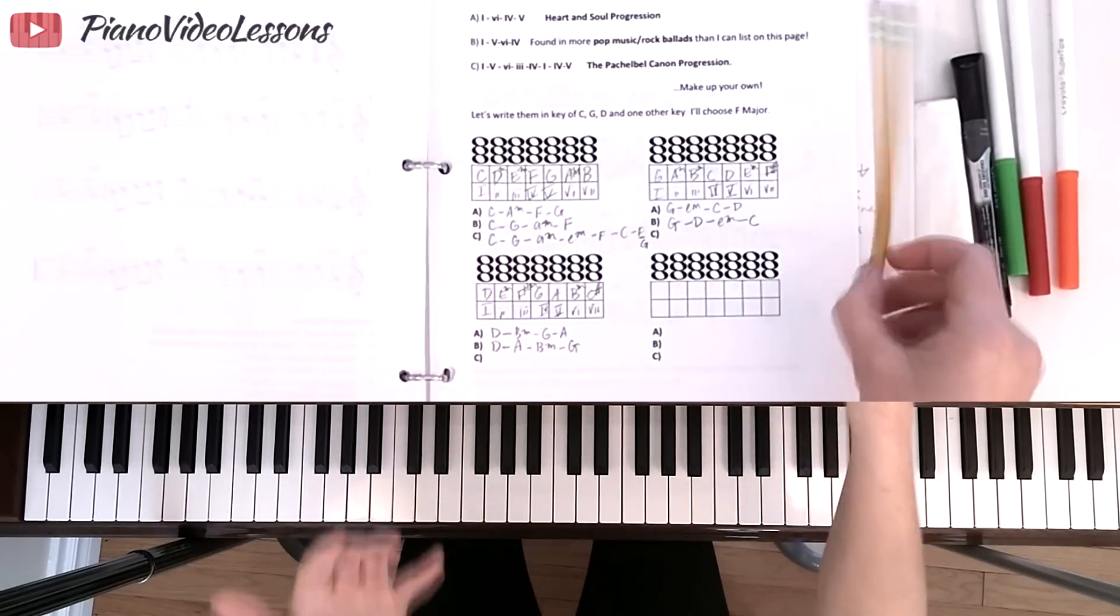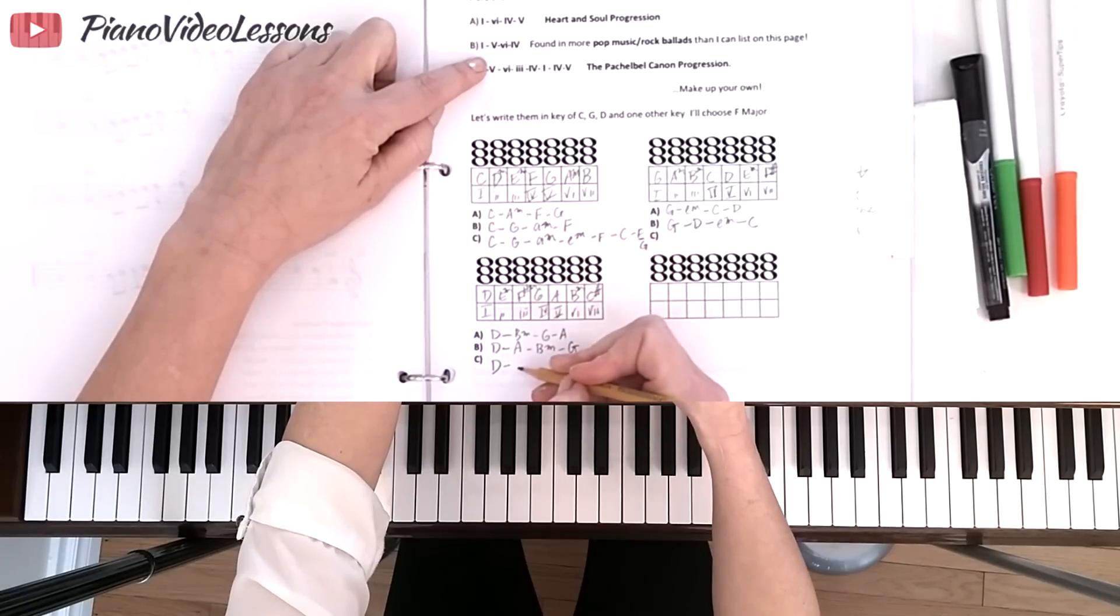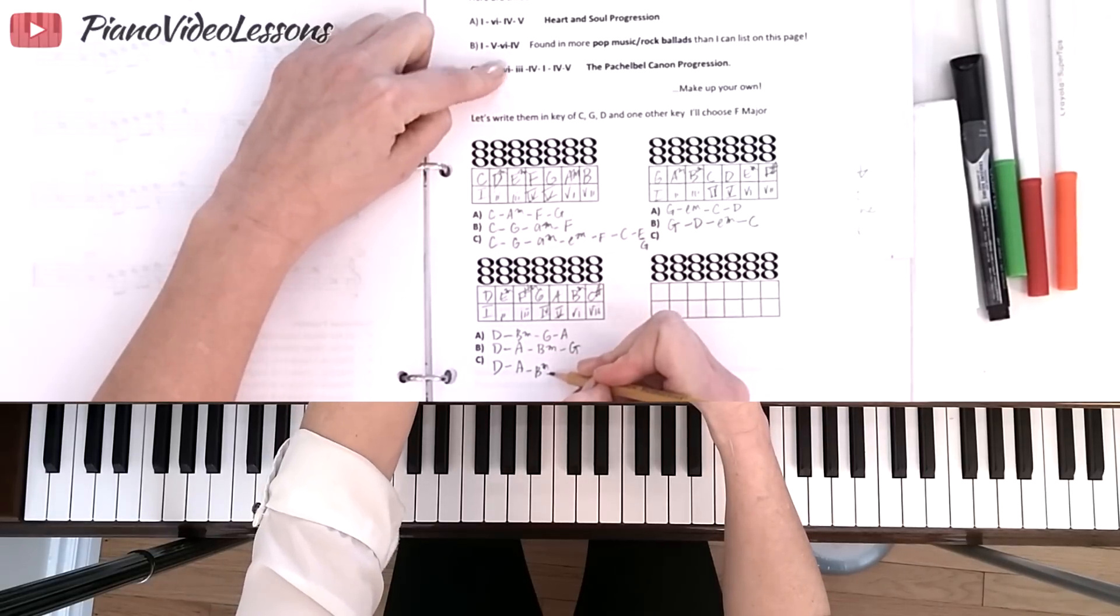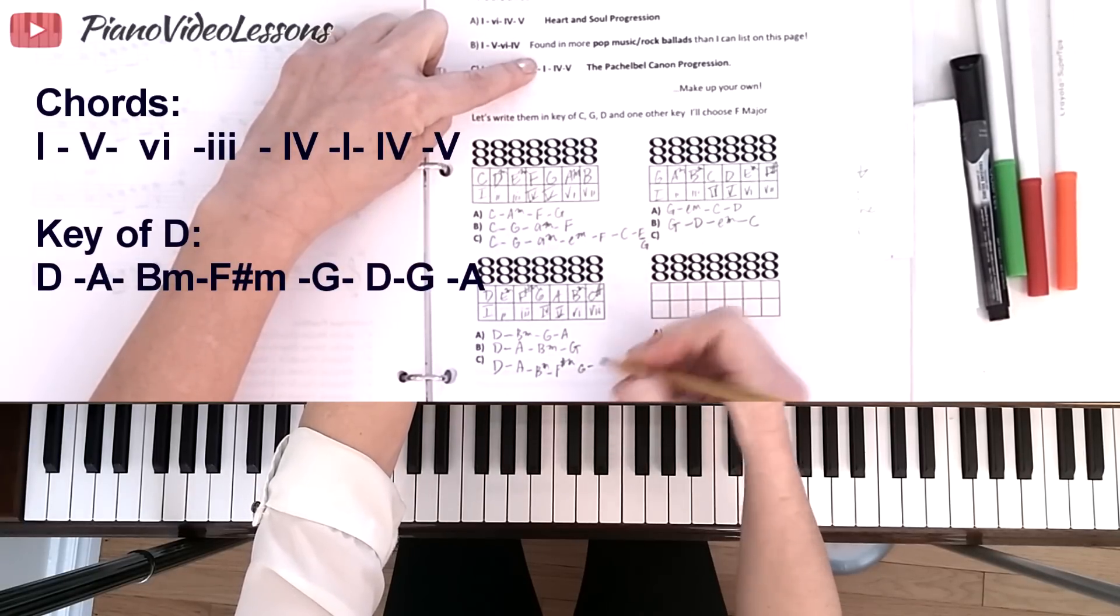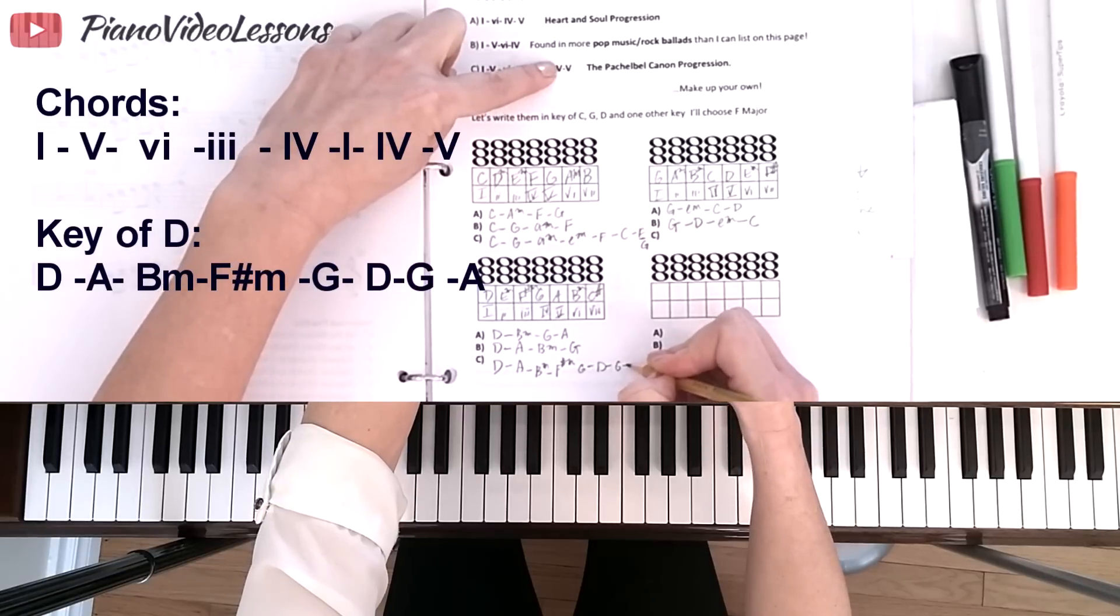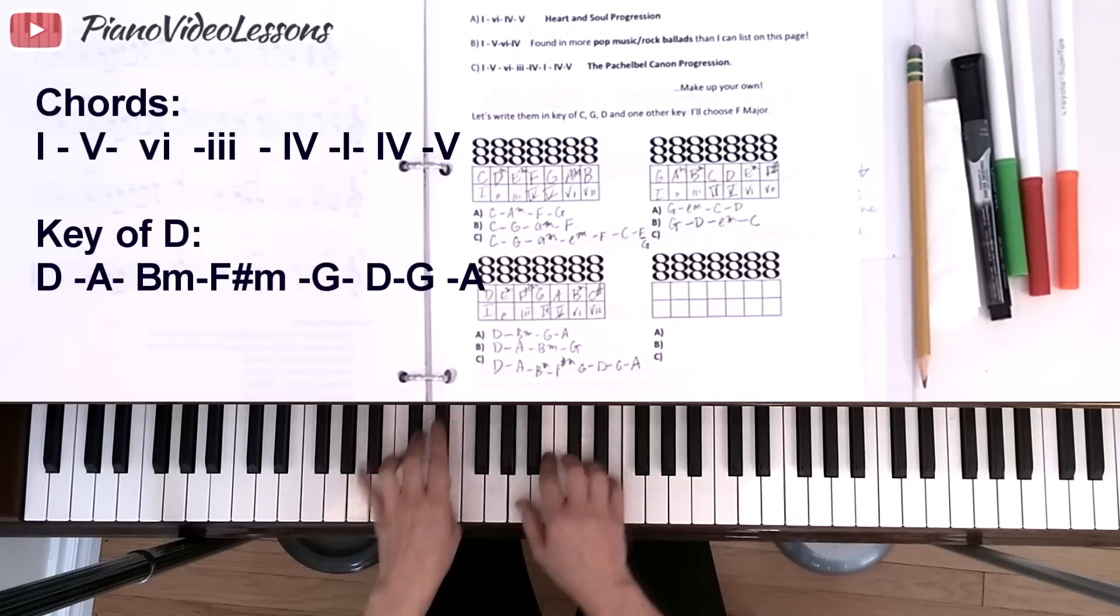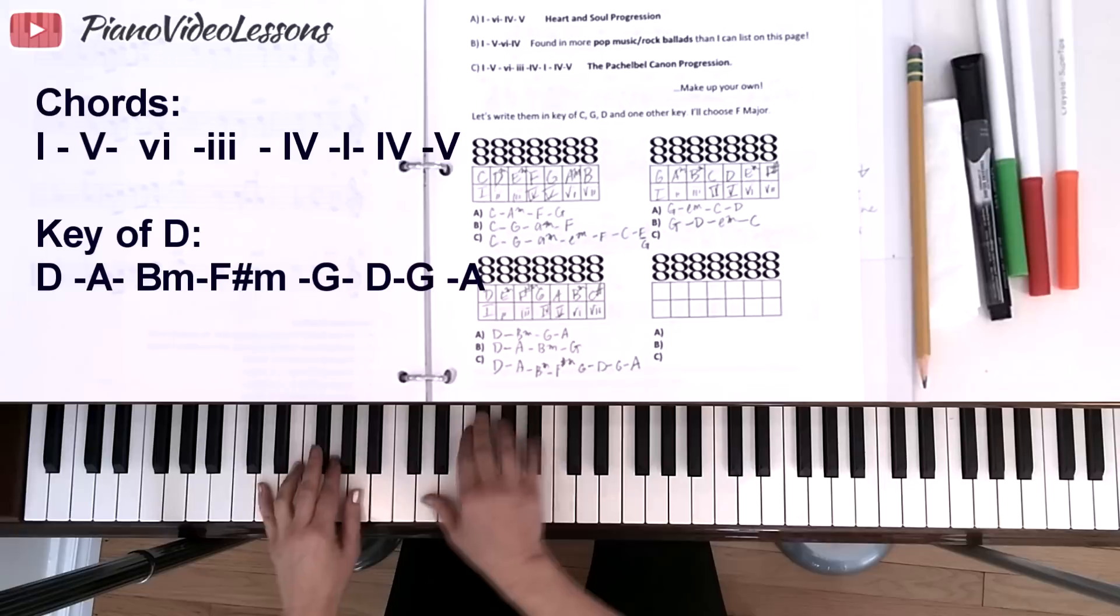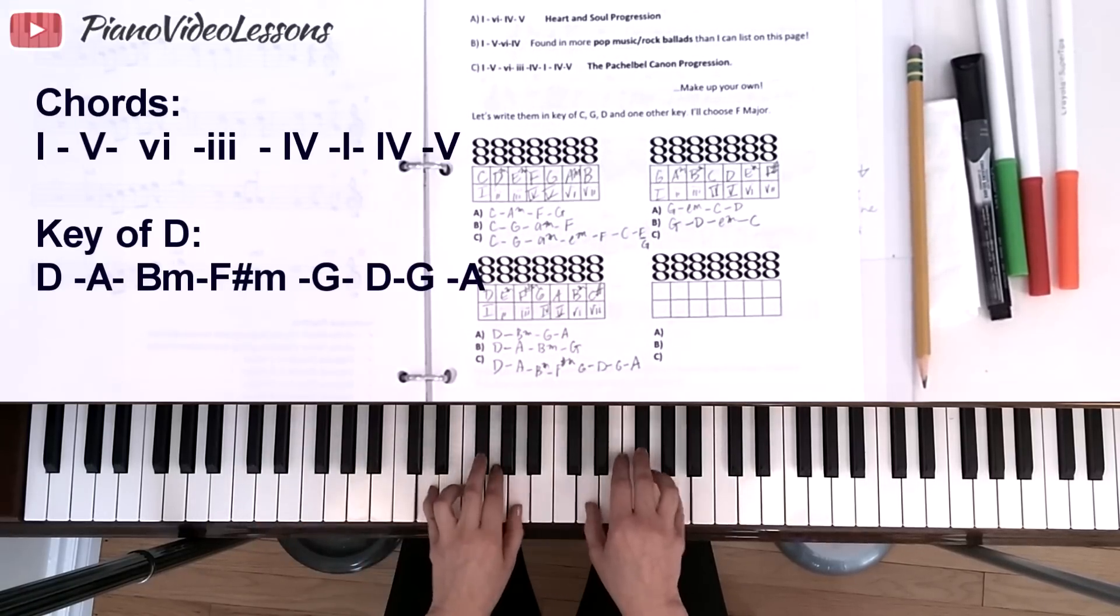That is the Pachelbel Canon progression in the key of C. The original key of this piece was D major. Let's write this chord progression out in D. We have D to the 5 chord, which is A, to the 6 chord, which is B minor, to the 3 chord, which is F sharp minor, to the 4 chord, which is G, to the 1 chord, which is D, and then back to 4, G, and then to 5, A. Let's give this a run-through. We're going to have D major, A major, F sharp minor, G major, D major, G major again, and then A, and to finish, back to D.